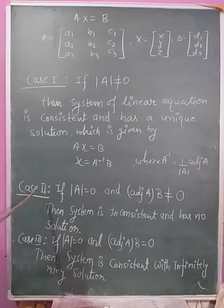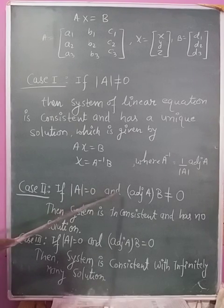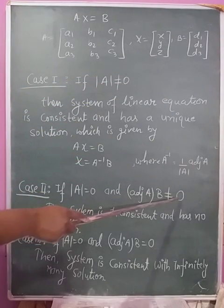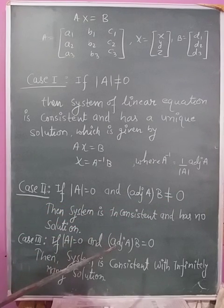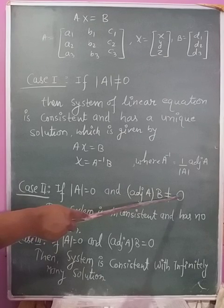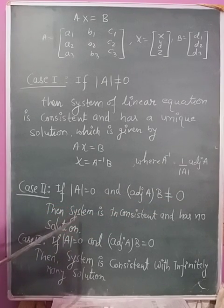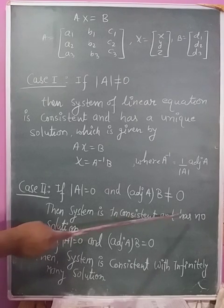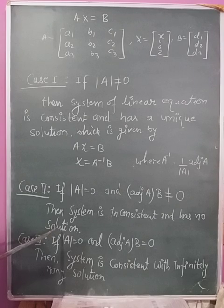Case 2: If determinant of A is equal to 0, that is A is singular matrix, and adjoint of A times matrix B is not equal to 0 matrix, then the system is inconsistent and has no solution.